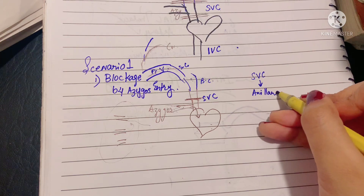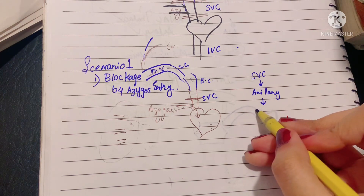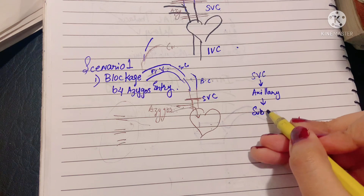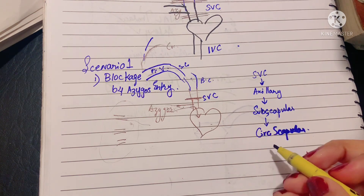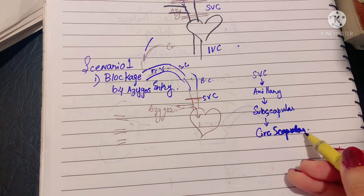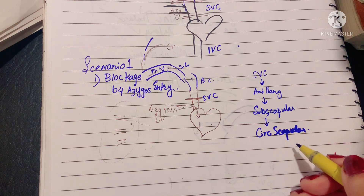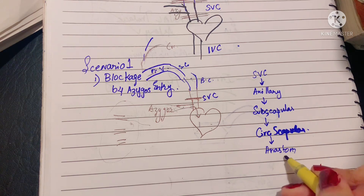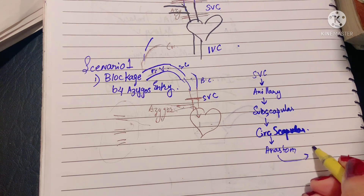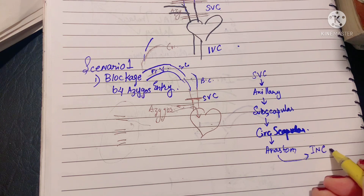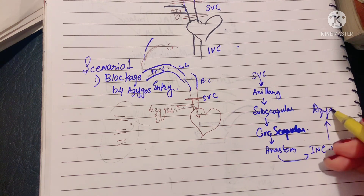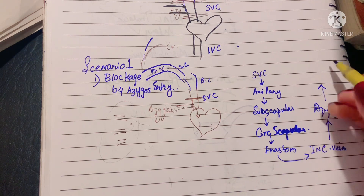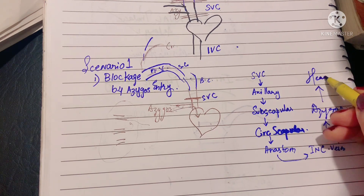To summarize Scenario 1: blood from the SVC goes to the subclavian vein, then into the axillary vein, into the subscapular vein — a tributary of the third part of the axillary vein — then into the circumflex scapular vein, which participates in the anastomosis around the scapula. Through the intercostal veins, it enters the azygous vein and finally reaches the heart.